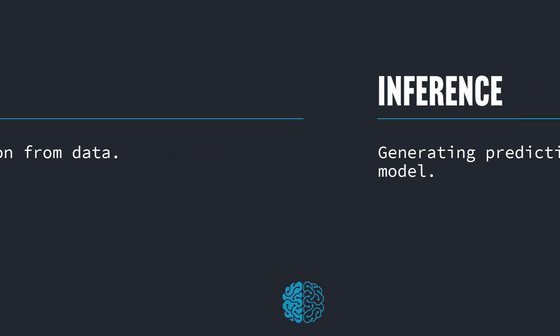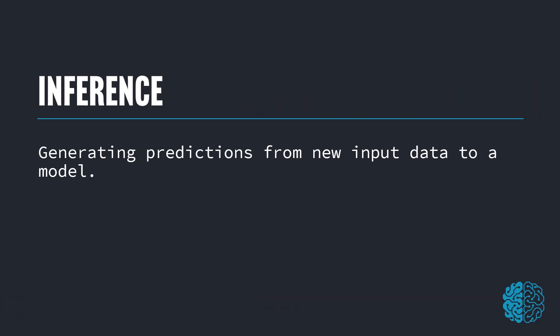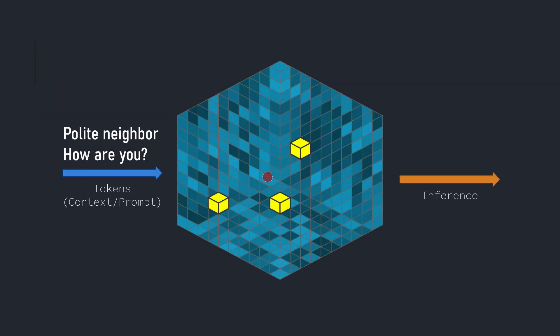And in the case of AI, it's generating predictions from new input data to a model. So we have an existing model with many examples of text, and now it's going to infer what might come next from a piece of text that we give it. Think of inference as travel.